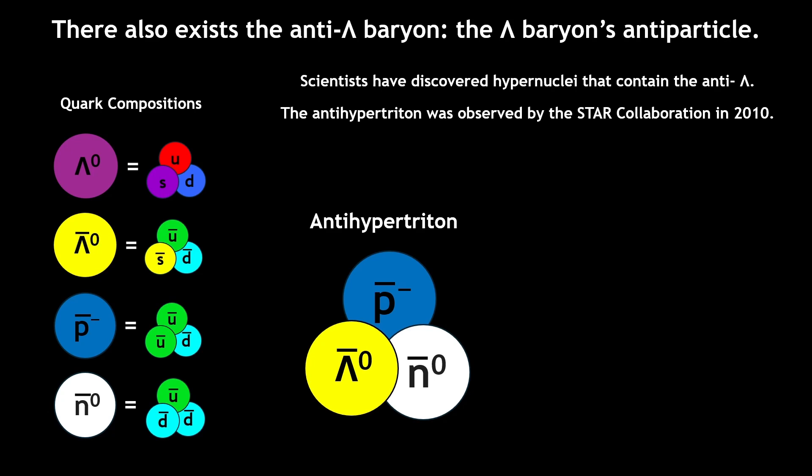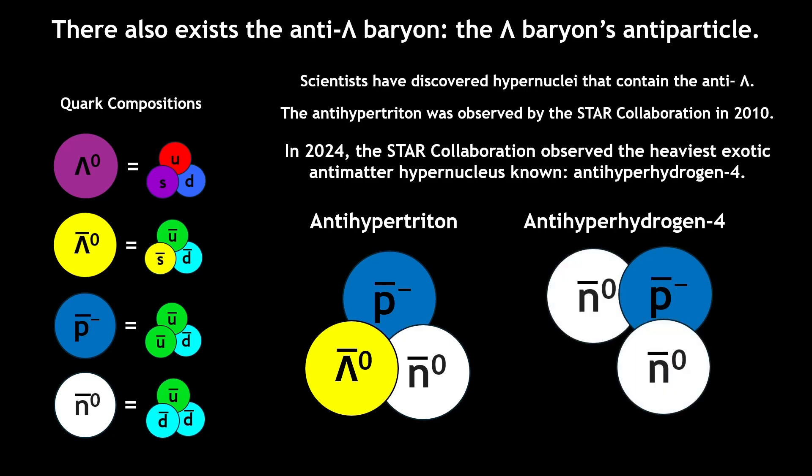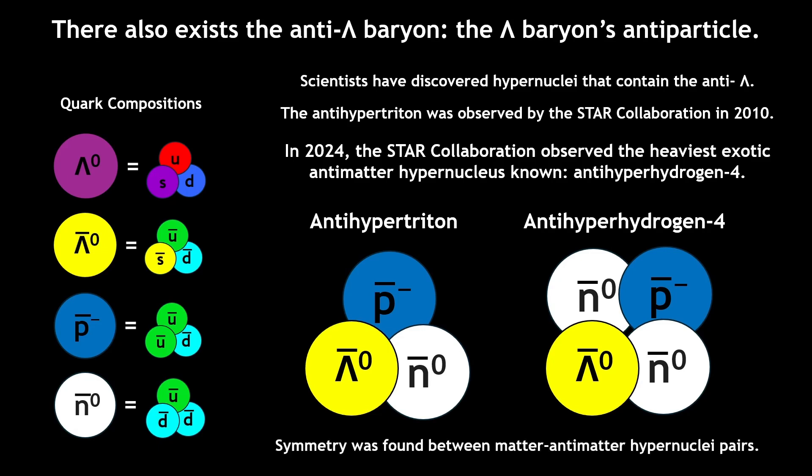The STAR collaboration reported the observation of the heaviest exotic antimatter hypernucleus known, anti-hyperhydrogen-4. This hypernucleus contains one anti-proton, two anti-neutrons, and one anti-lambda baryon. Scientists have used these discoveries to compare lifetimes of matter-antimatter pairs of hypernuclei, and found a strong form of symmetry.